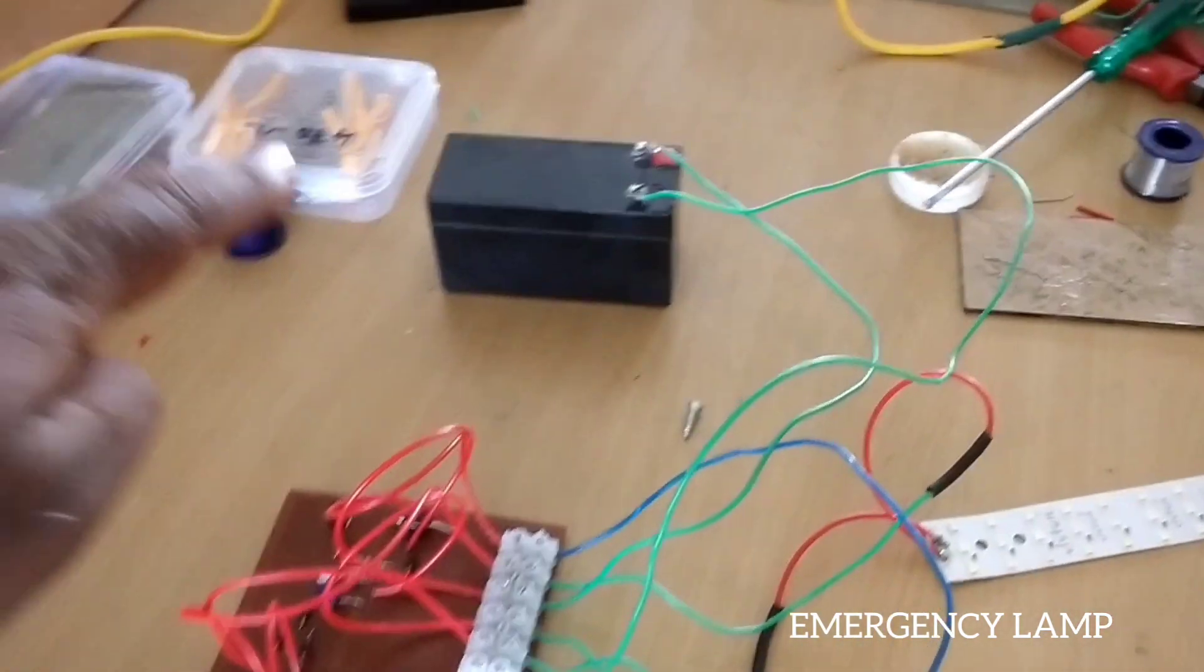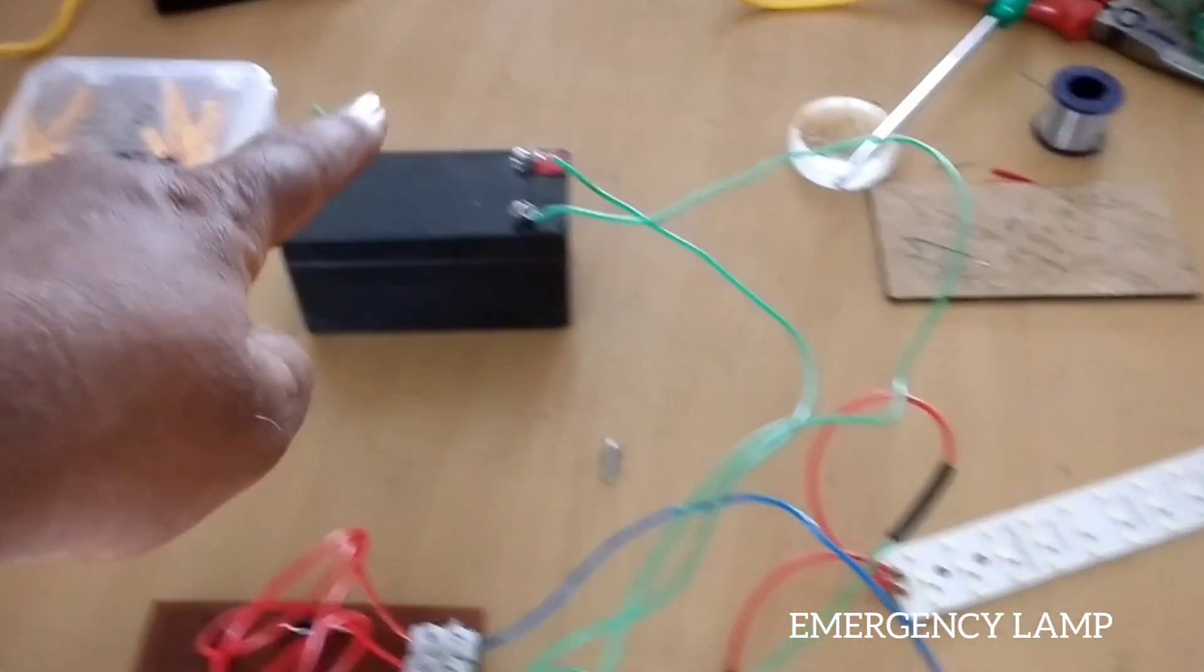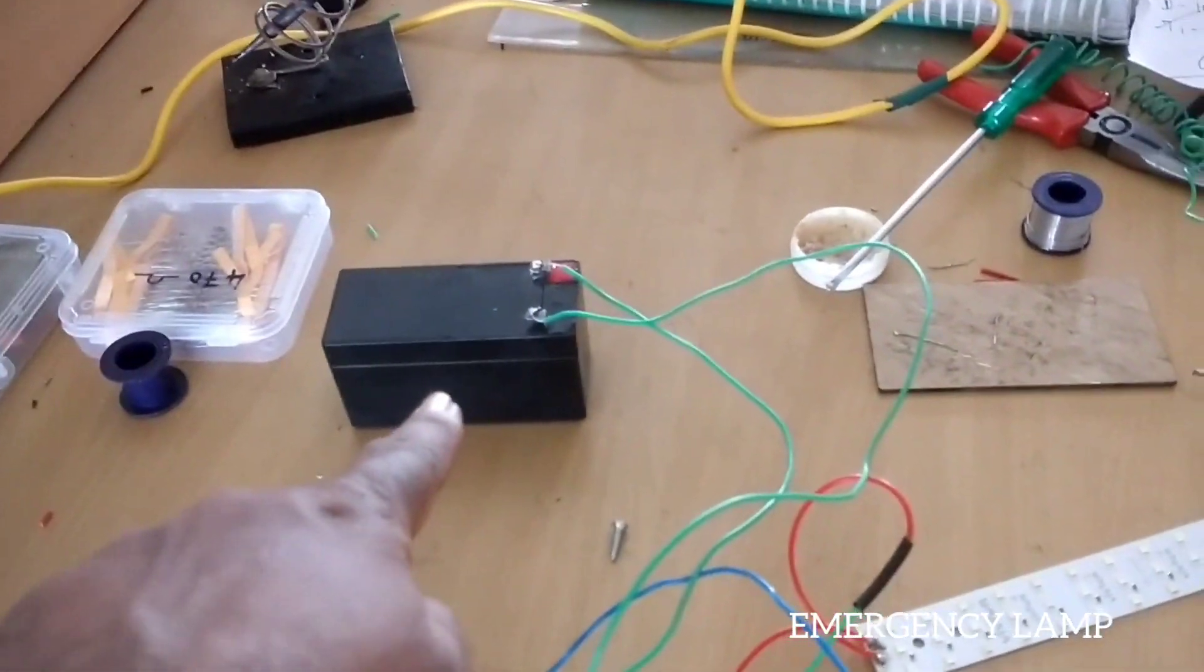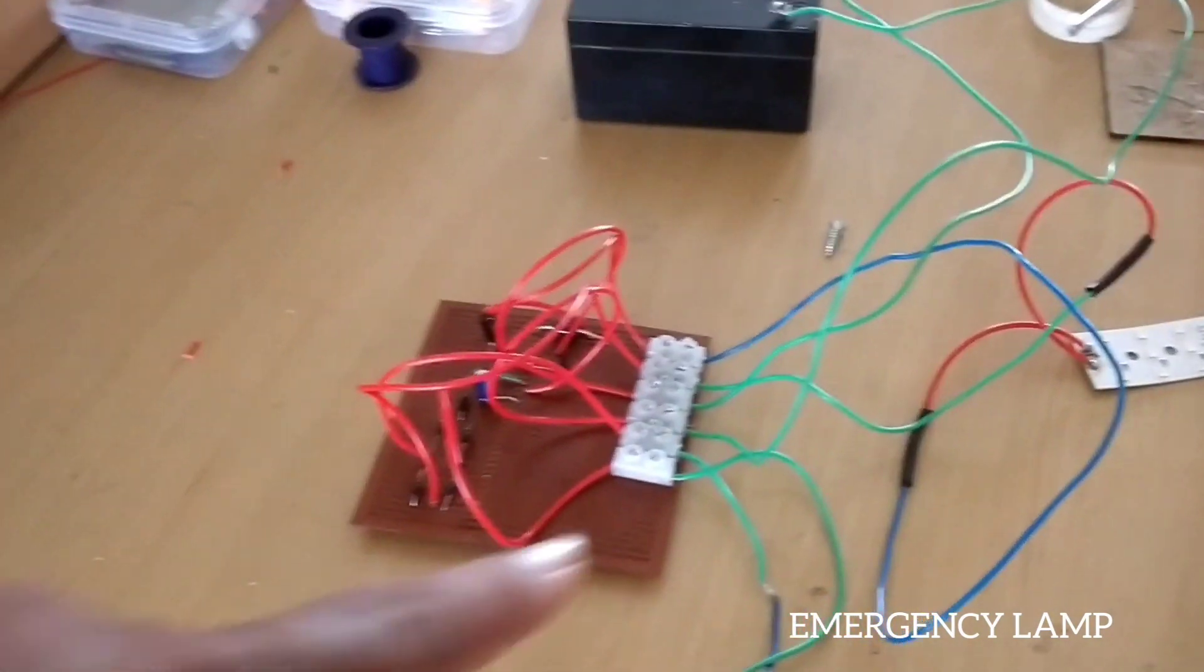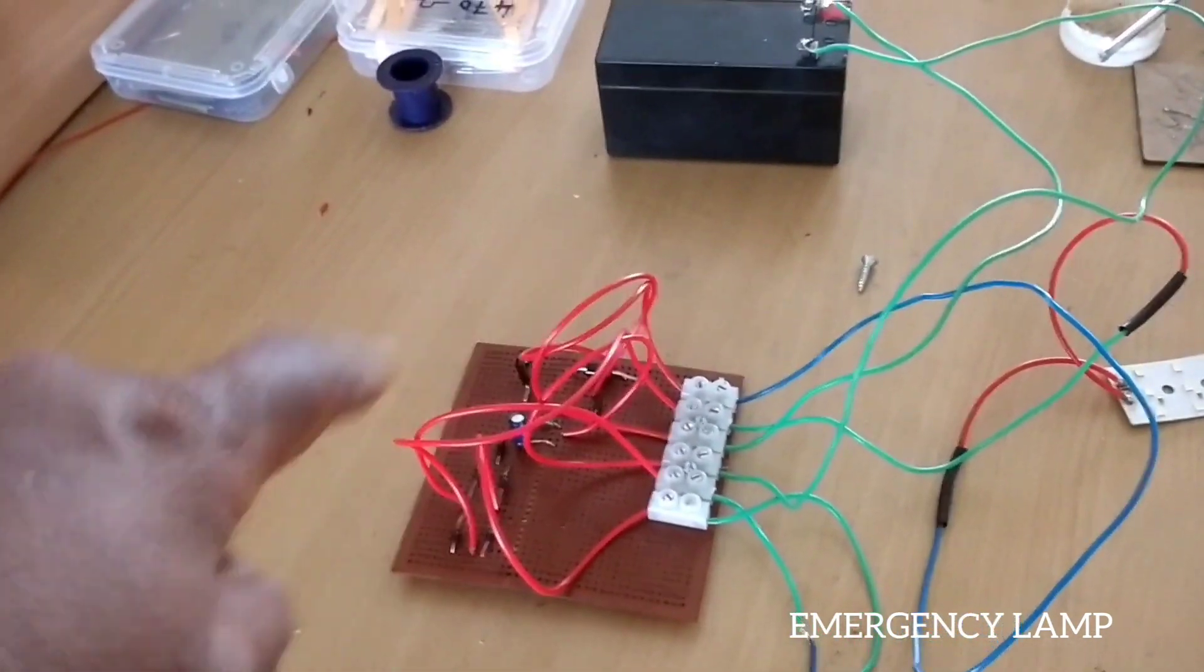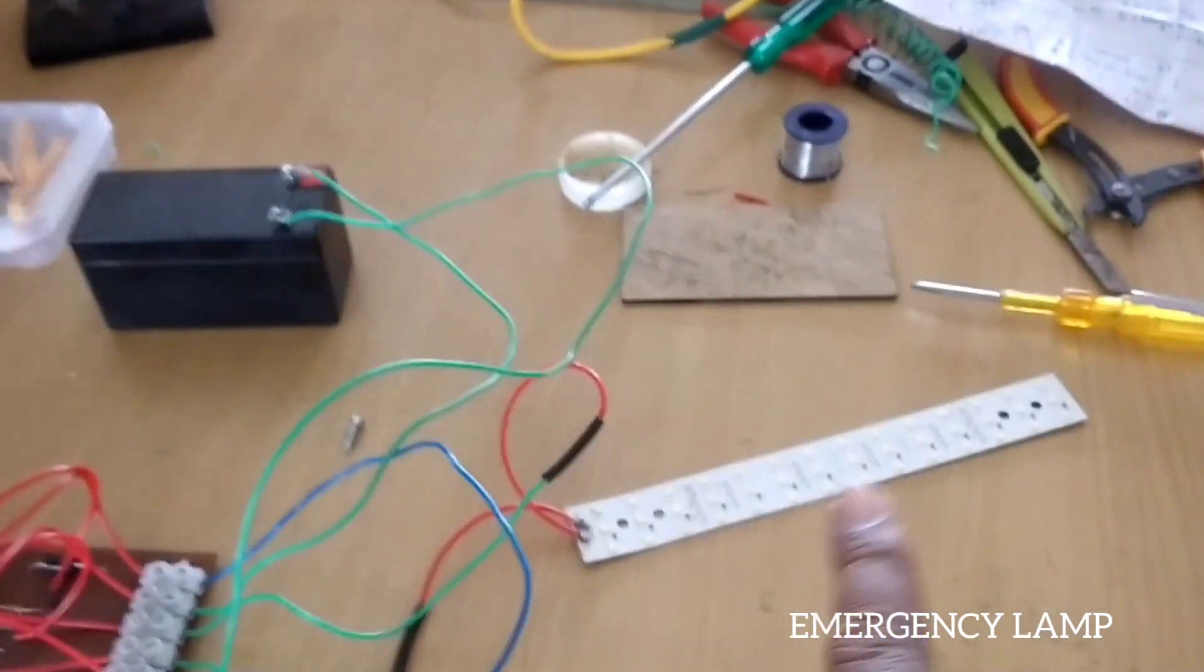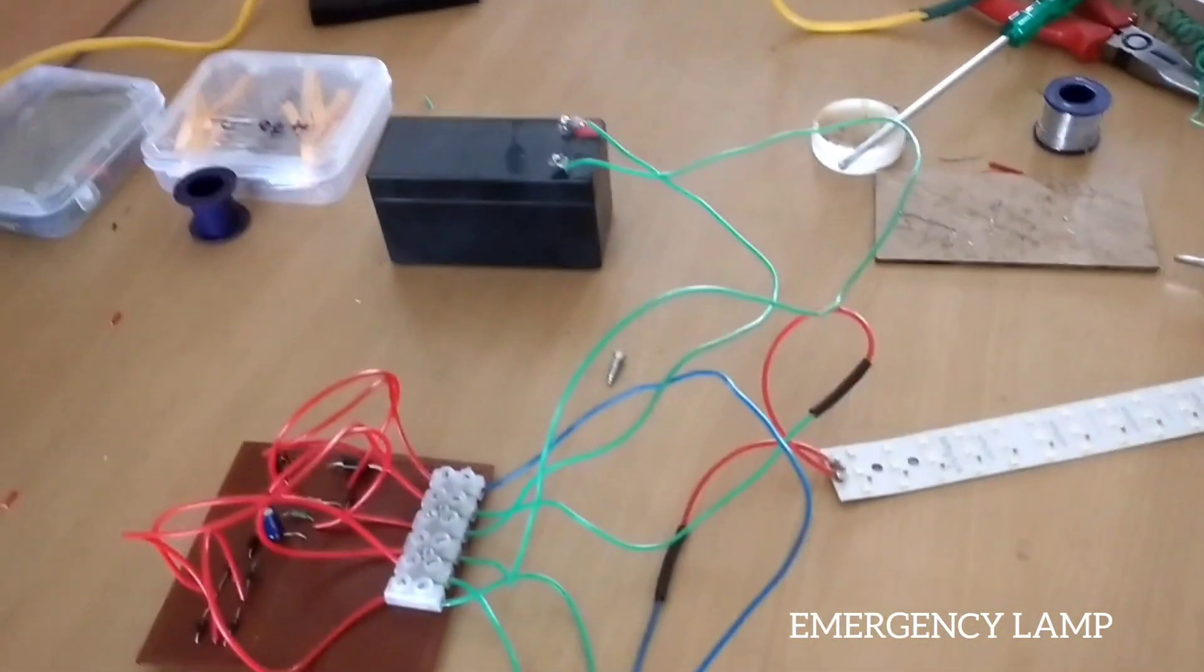Here the battery will be charged. And now when the power is on, the battery will be charged automatically because of this circuit here. And you can see the LED strip is off.